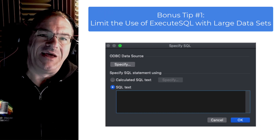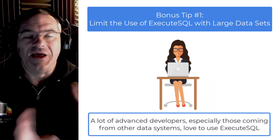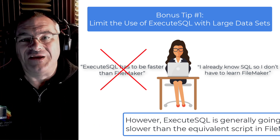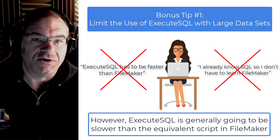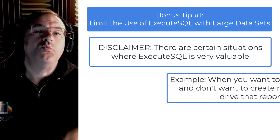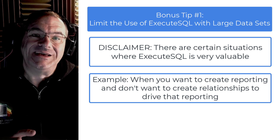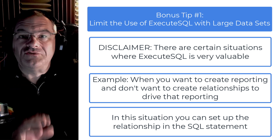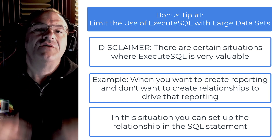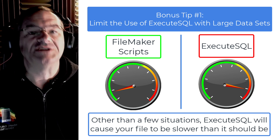Be careful about using the ExecuteSQL function with large FileMaker data sets. A lot of advanced FileMaker developers who come from other data systems love ExecuteSQL because they assume it's fundamentally faster than FileMaker. But ExecuteSQL is generally going to be slower than the equivalent scripting you can provide in a FileMaker solution. There is a subset of situations where ExecuteSQL is valuable — primarily for reporting where you don't want to create relationships, allowing you to do a find request through related data via the SQL statement without setting up table occurrence groups. But it's not a wonder tool. Generally, if you use ExecuteSQL for everything, you probably have a FileMaker file running slower than it should be.